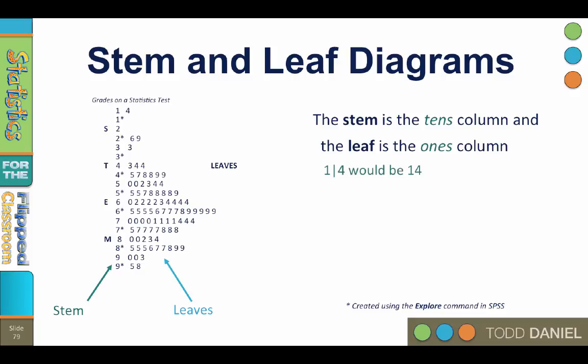So the first number in this stem and leaf is 1 and 4, or 14. The row 4 with 3, 3, 4, that contains the numbers 43, 43, 44.